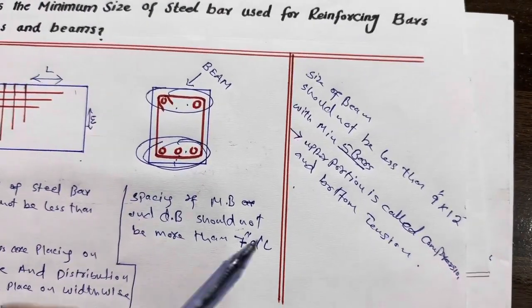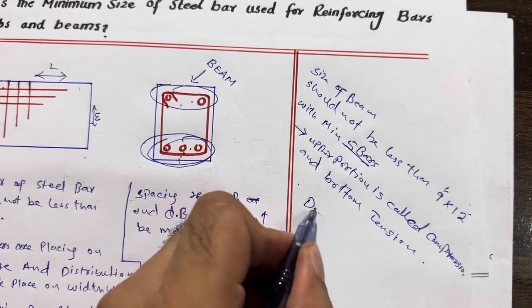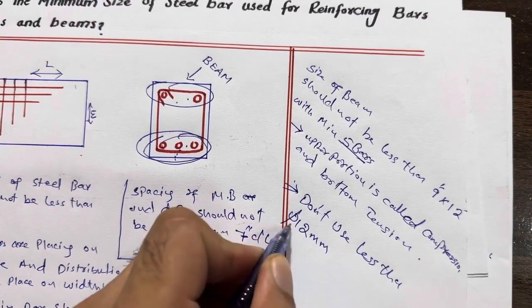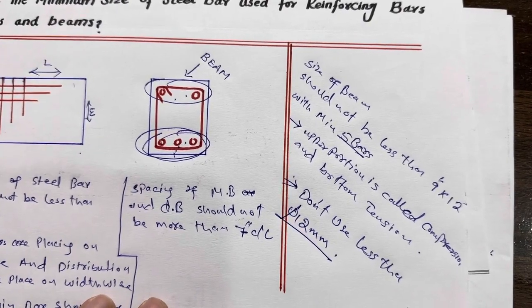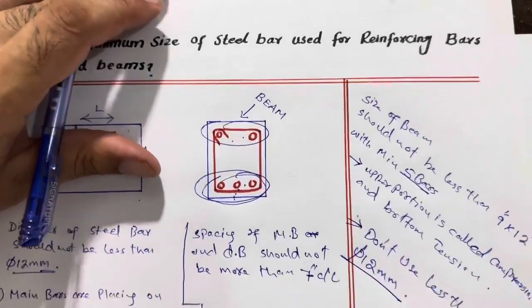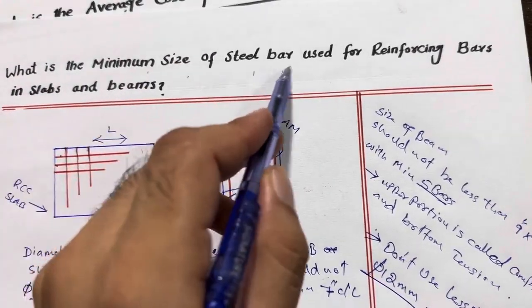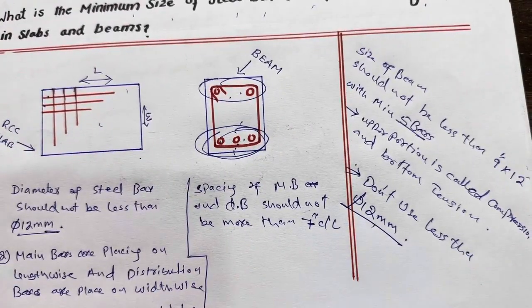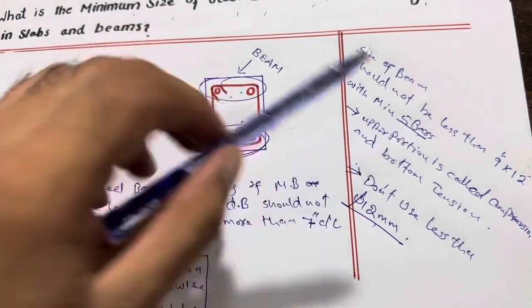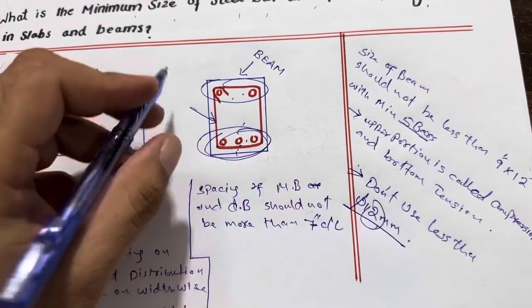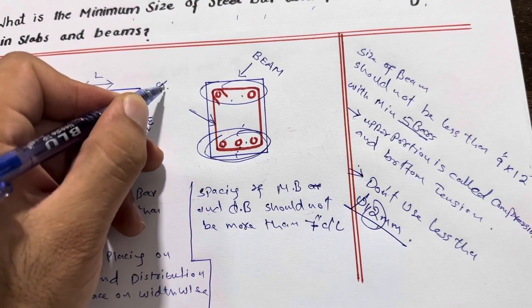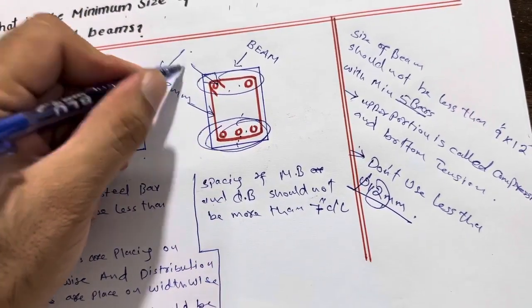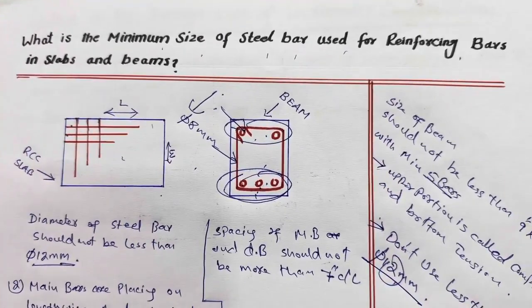Remember, same for the beam — don't use less than 12 millimeter diameter. This is the minimum diameter for the plinth beam or floor beam. These are very important technical details: the minimum size of steel bar used in reinforcing bars for slab and beam is 12 millimeter. If you use 10 millimeter, you will face problems because it cannot support the structural load. Also, when using 12 millimeter main bars, the stirrup ties should be a minimum of 8 millimeter. Thanks for watching, see you in the next video. Goodbye.